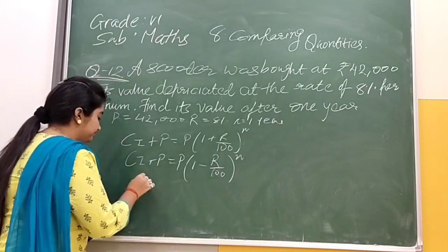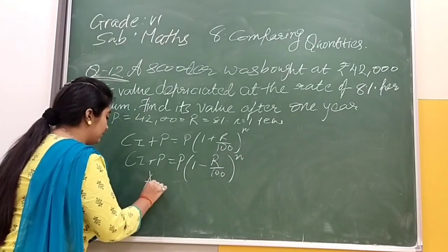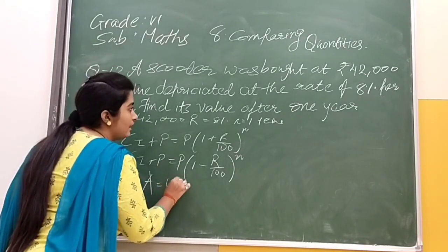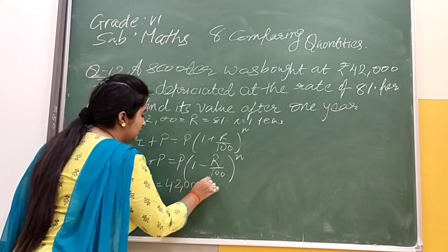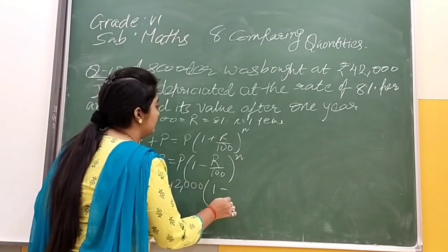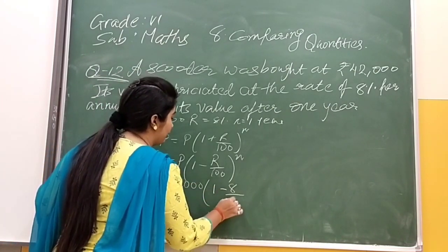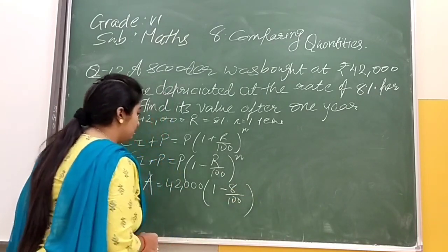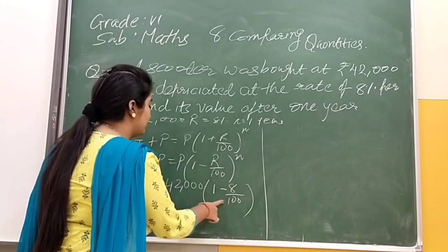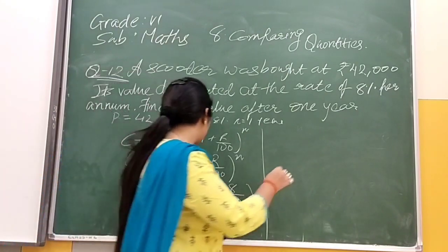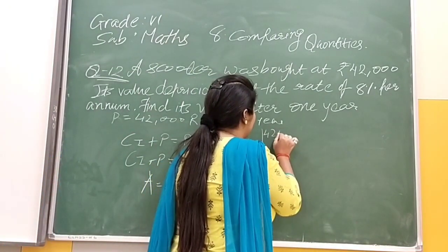Let us put CI+P = A. Here we have 42,000 multiplied by (1 - 8/100). Now the 100 will multiply with 1.